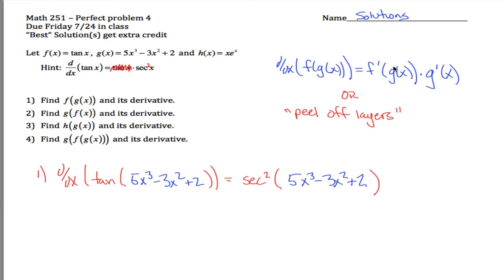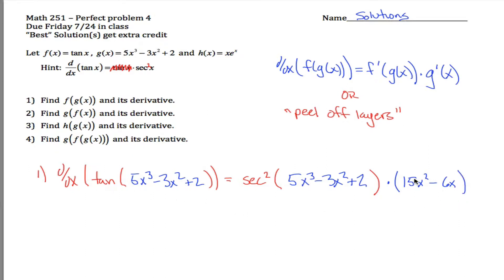We left the inside alone for this step, but we're still not done — we have to multiply by g prime of x. In the peeling off layers way, we're not done because we still haven't taken the derivative of the blue layer. We did the red layer, but not the blue, so we multiply by the derivative of the blue. Since it's just a polynomial, using the power rule we get 15x squared minus 6x, and there's the derivative.